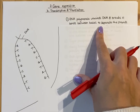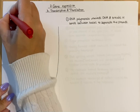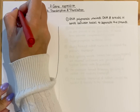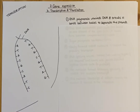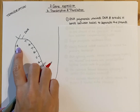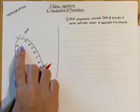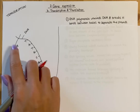The next stage in transcription is that we bring in free RNA nucleotides. This is where it differs from DNA replication, because normally DNA nucleotides would be used, but here it is RNA nucleotides. So we have to pair bases slightly differently. If an RNA nucleotide was pairing with adenine on the DNA side, it wouldn't use thymine — because it's RNA, it would use uracil.